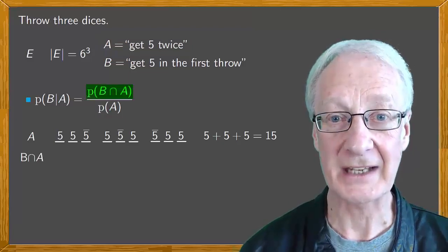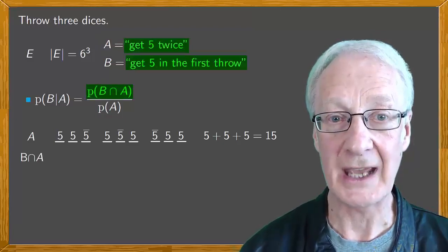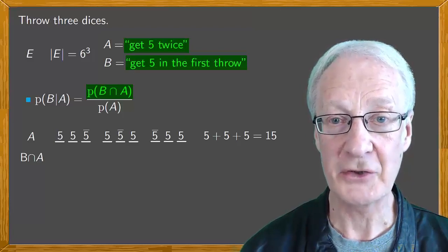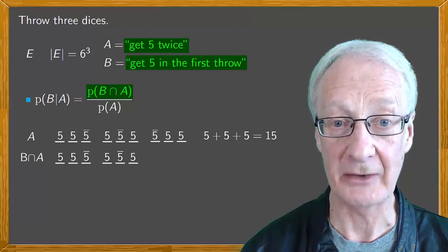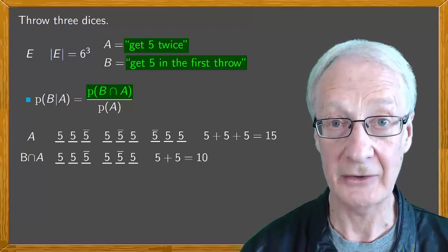As for B intersected with A, we need to get five on the first throw and two fives in total, so that includes the first two cases from above. A total of ten favorable cases.